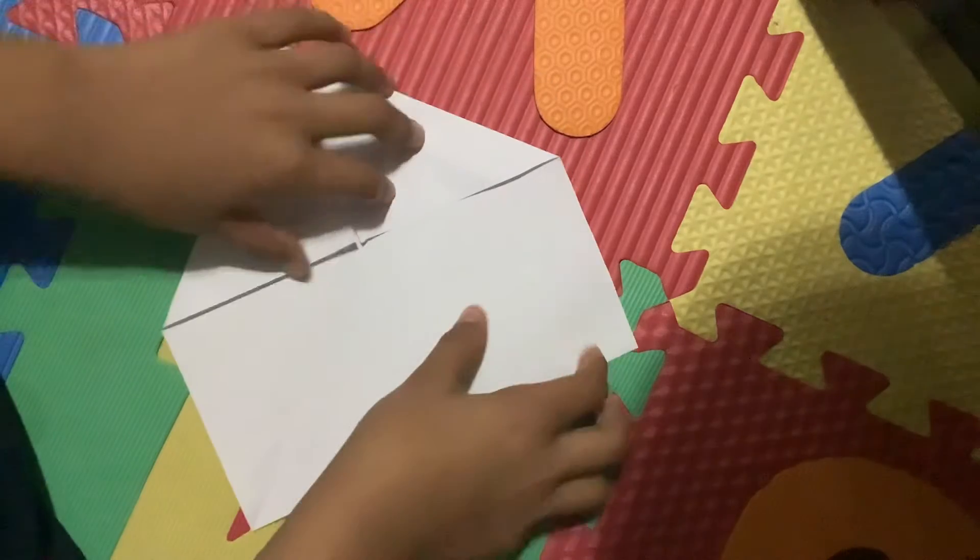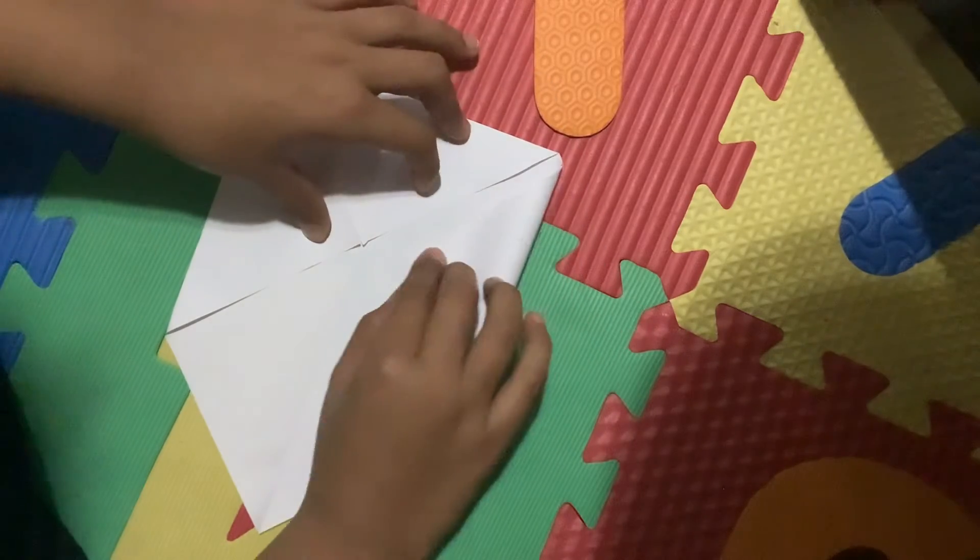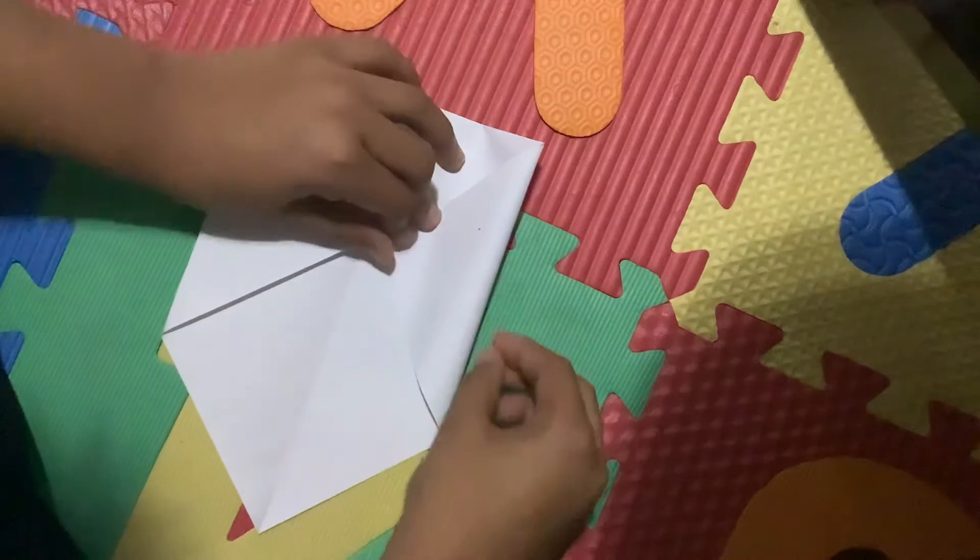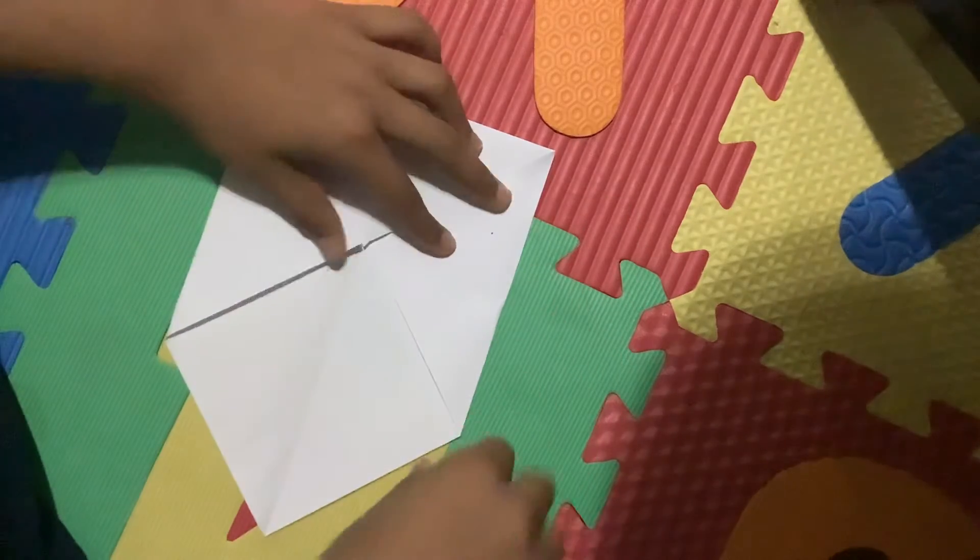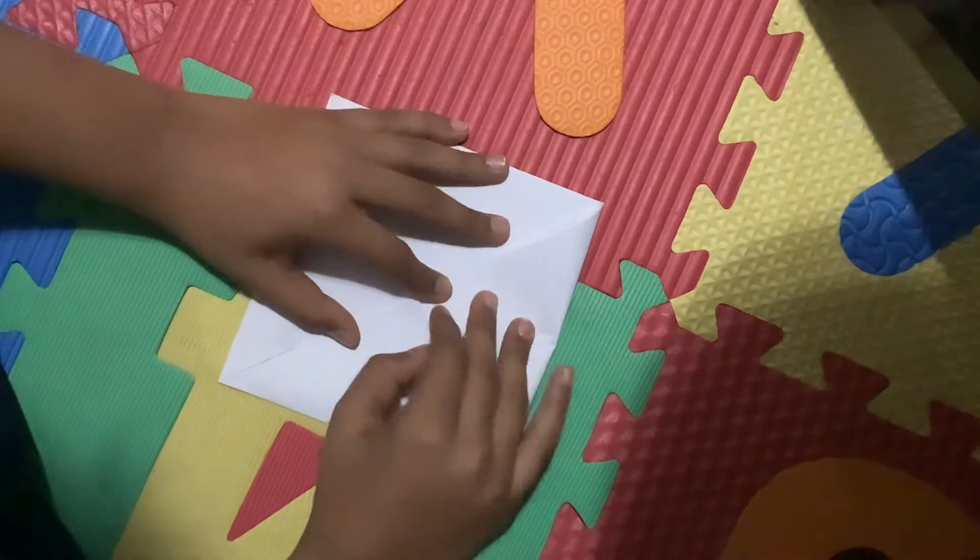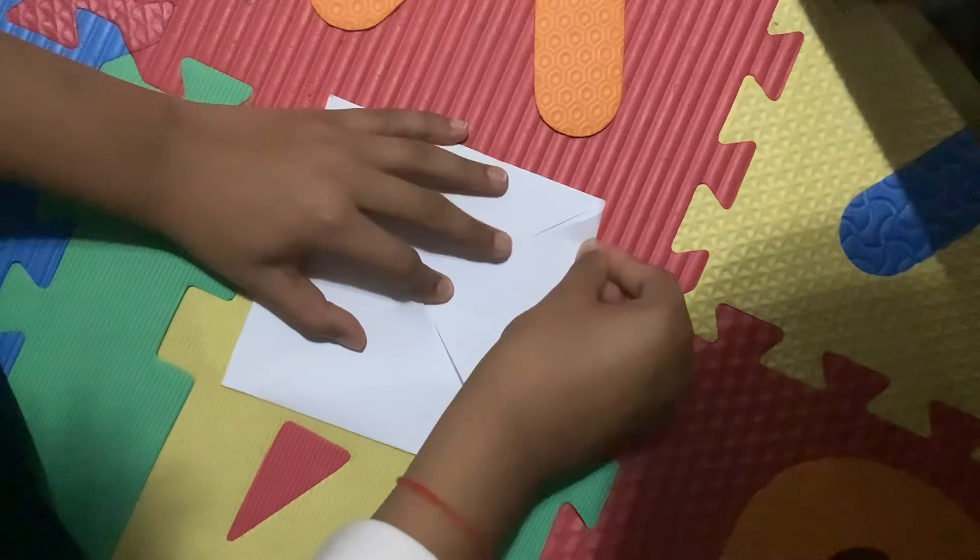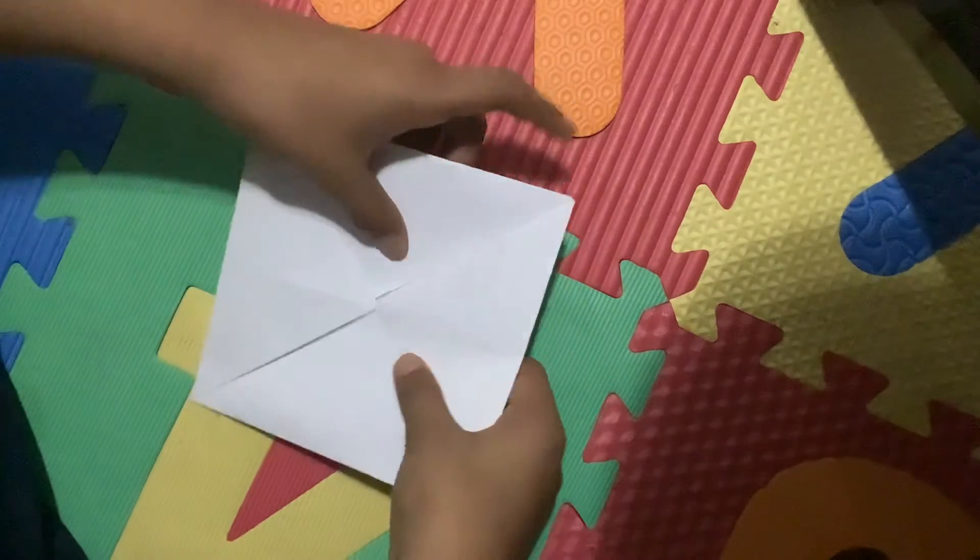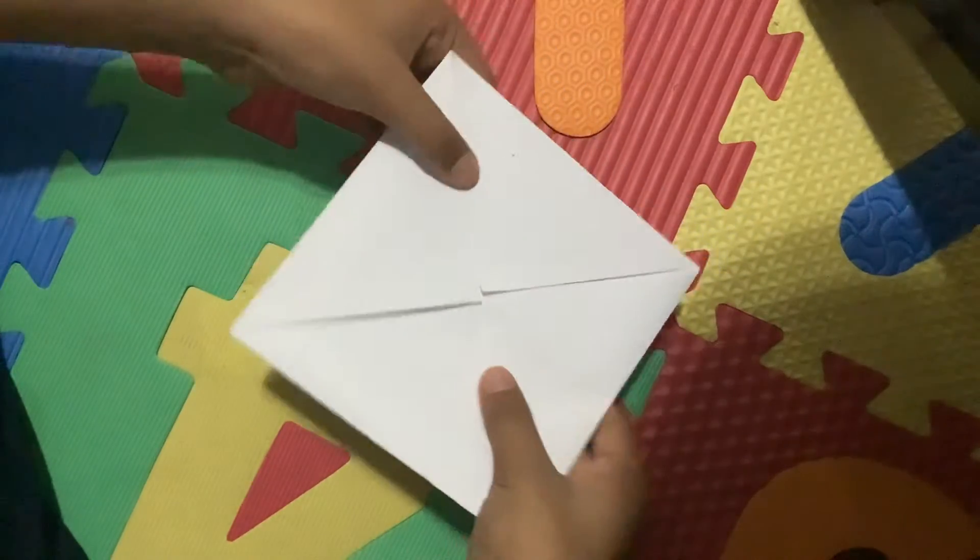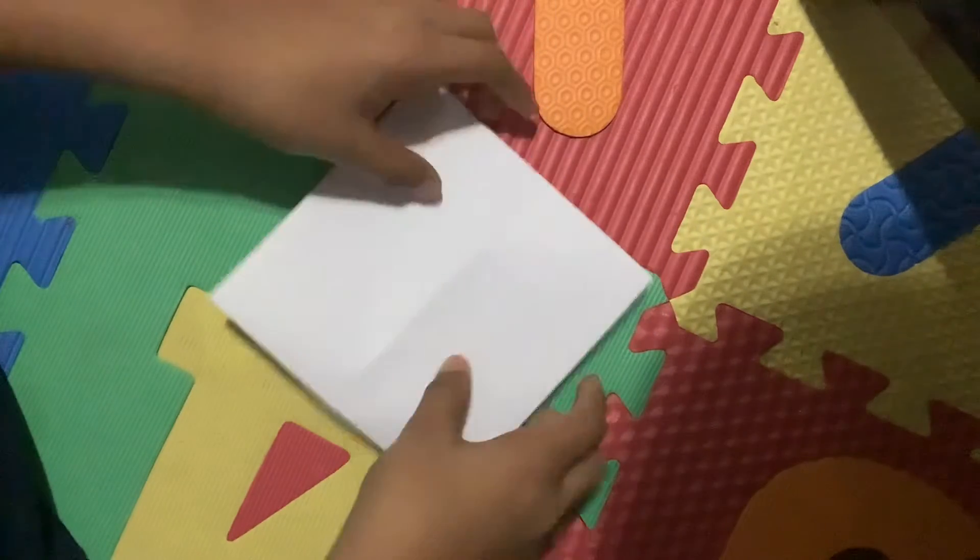And then we're going to fold the paper over here too. Oh, this isn't that even, but make sure yours is even because mine is not. Make sure you crease it really good. So it should have four triangles and we're going to flip it over. Make sure nothing moves.